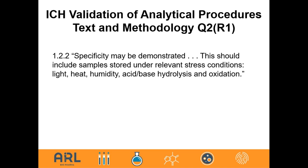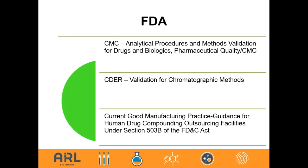An important ICH reference is Q2 section 1.2.2, which addresses specificity and includes stress conditions such as light, heat, humidity, acid-base, hydrolysis, and oxidation. The FDA has clear documentation regarding stability studies and what a method should include, including a validation document from CDER referenced for many decades and the FDA guidance for industry on analytical procedures and methods validation. Stress studies should include stressing products for acid-base hydrolysis, thermal or heat, photolysis, and oxidation.